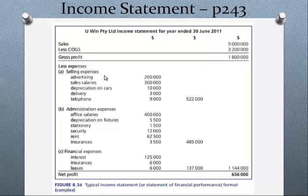From the gross profit we have three types of expenses: selling expenses — advertising and sales salaries form the biggest part, giving a subtotal of $522,000; admin expenses — office salaries again the bigger proportion, representing $485,000; and financial expenses where the big proportion is interest. That tells me the business has borrowed, and I'll be interested in looking at the balance sheet to assess solvency. Adding these subtotals gives a total of $1.144 million, which is taken away to derive our bottom-line profit of $656,000.